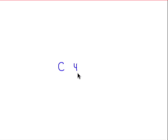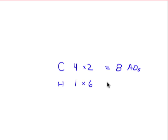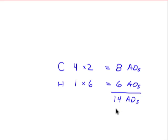First, what are the atomic orbitals that are involved? Each carbon atom contributes four atomic orbitals: a 2s, a 2px, 2py, and 2pz. There are two carbon atoms, so carbon altogether contributes eight atomic orbitals. Each hydrogen atom contributes one atomic orbital, the 1s orbital. There are six hydrogen atoms altogether, so hydrogen contributes six atomic orbitals. Altogether, we have 14 atomic orbitals.